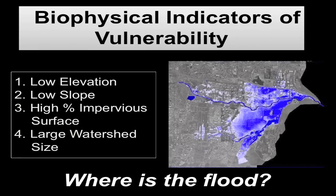Basic hydrological science dictates that water's going to go to areas of low elevation and low slope, that flooding occurs more often in watersheds with a high percentage of impervious surface and a large watershed size.